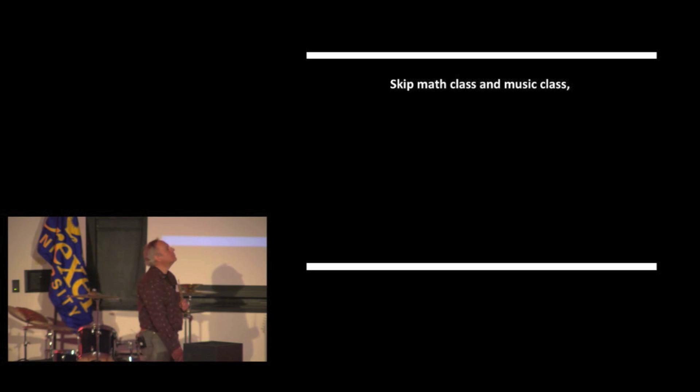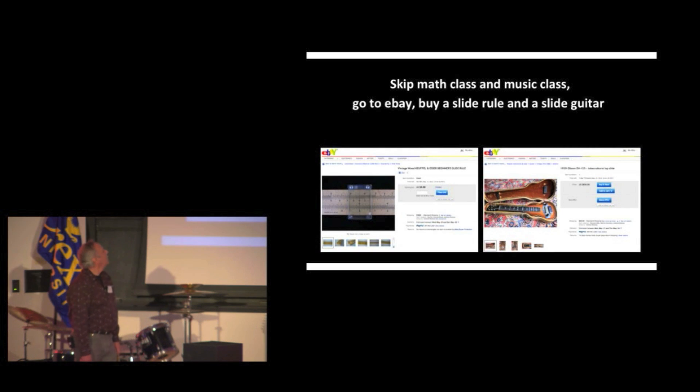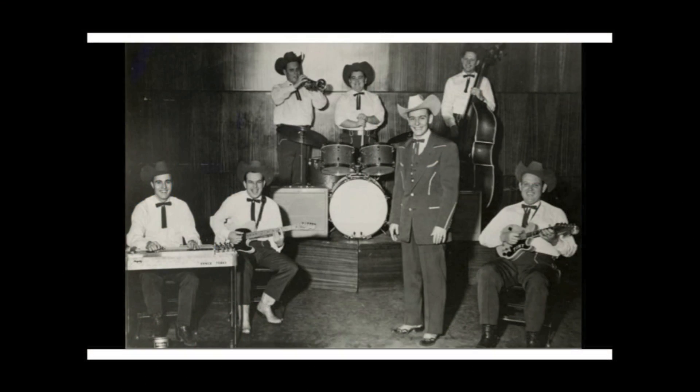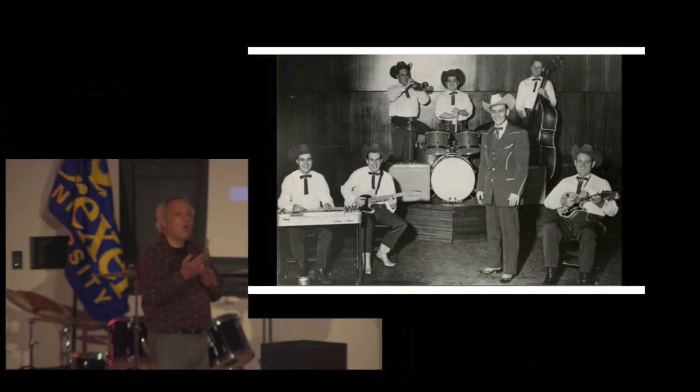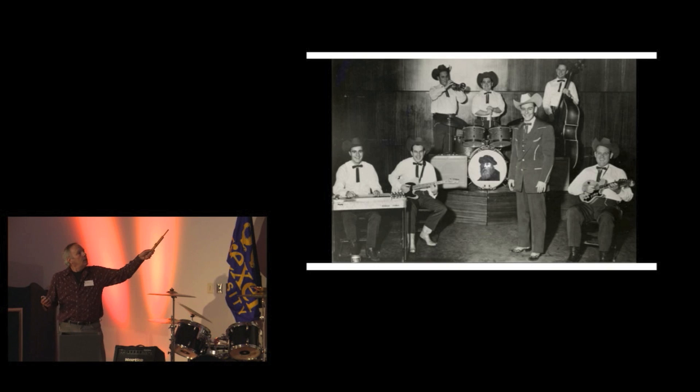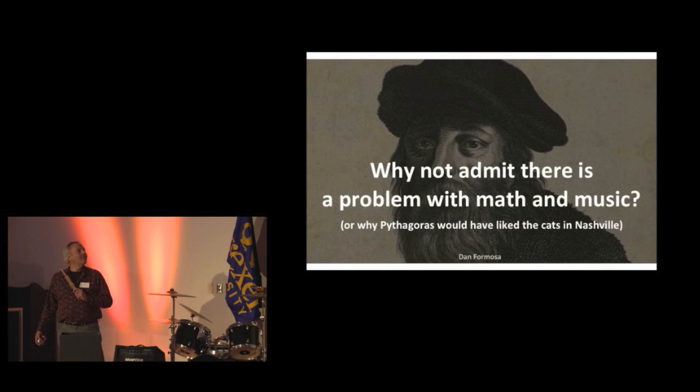Here's my recommendation. Skip math class and music class. Go on eBay. Buy a slide rule and a slide guitar. And learn them both at the same time. If you're really ambitious, move to Nashville. Put a band together. Write all your musical arrangements using numbers not letters. And see if you can talk the drummer into putting a picture of Pythagoras on his bass drum head. Thanks a lot.